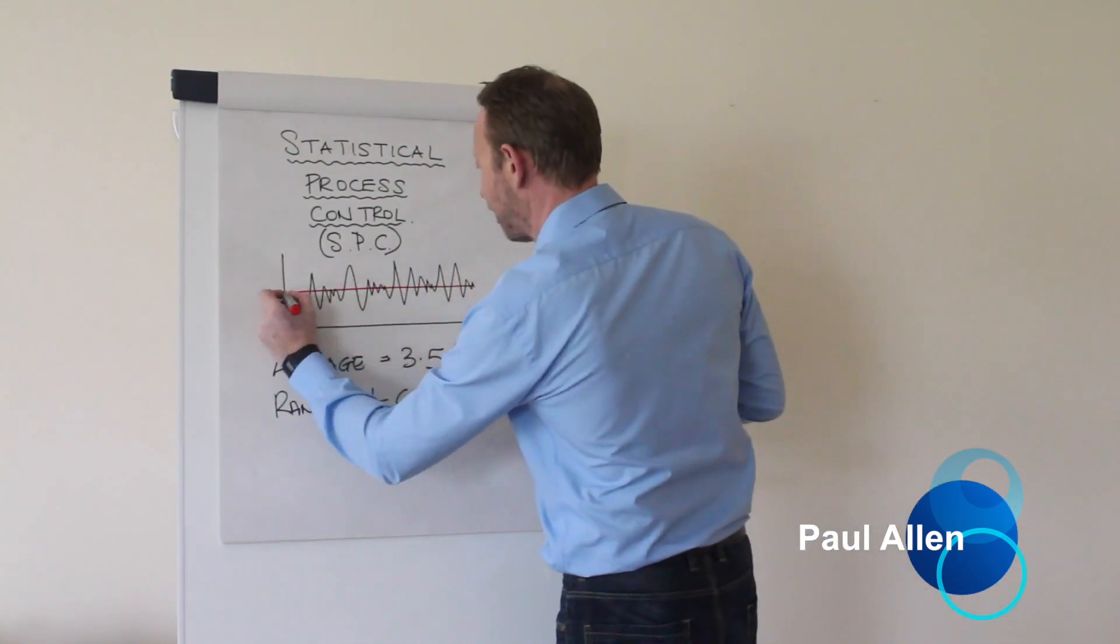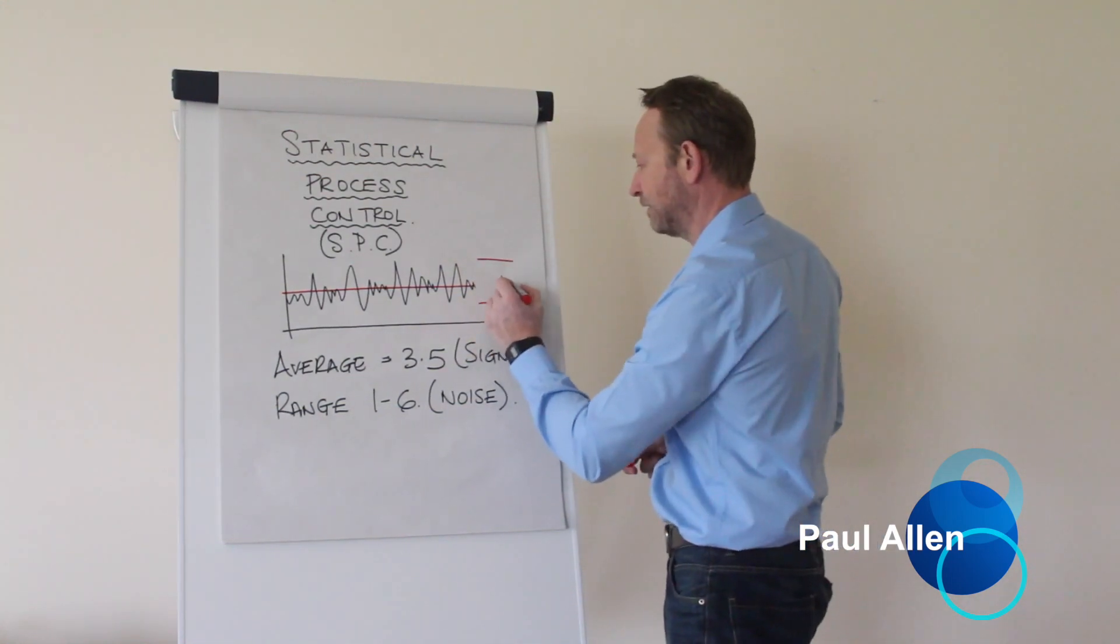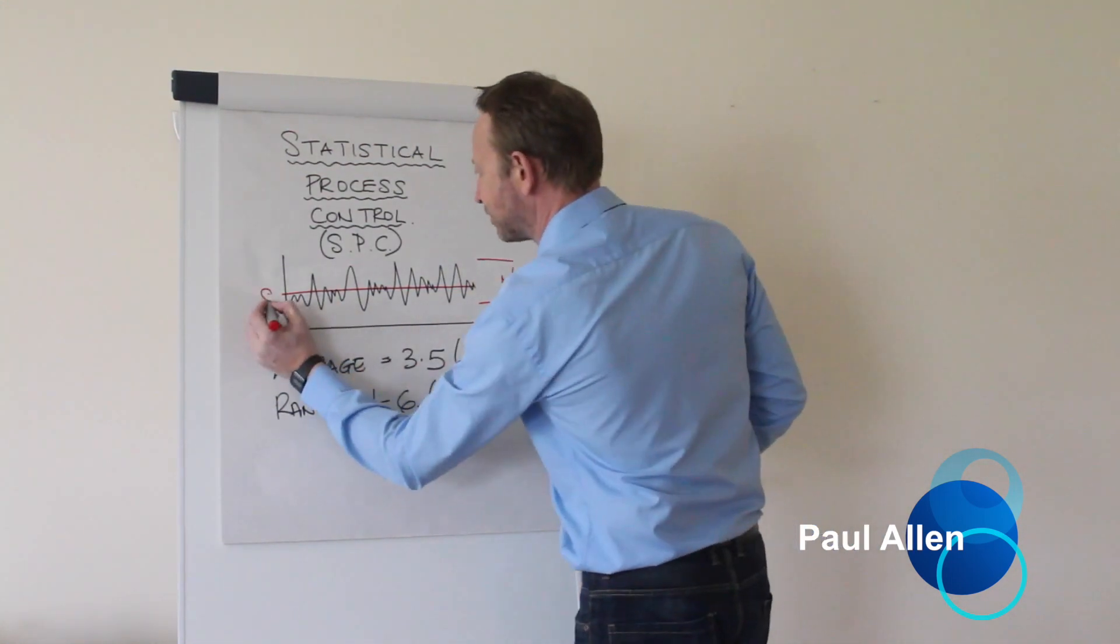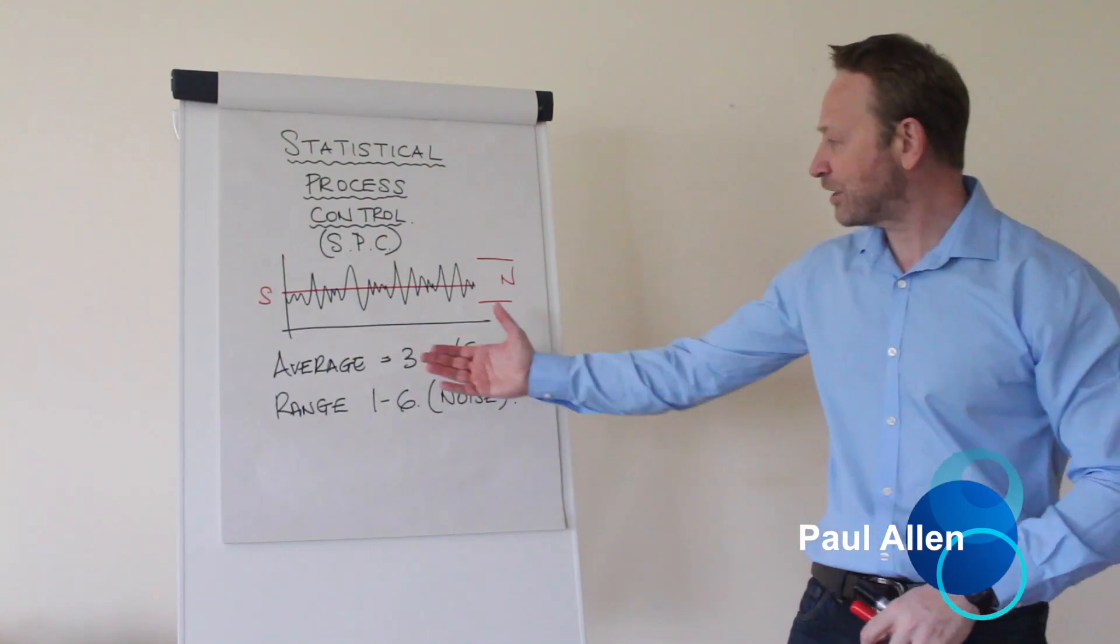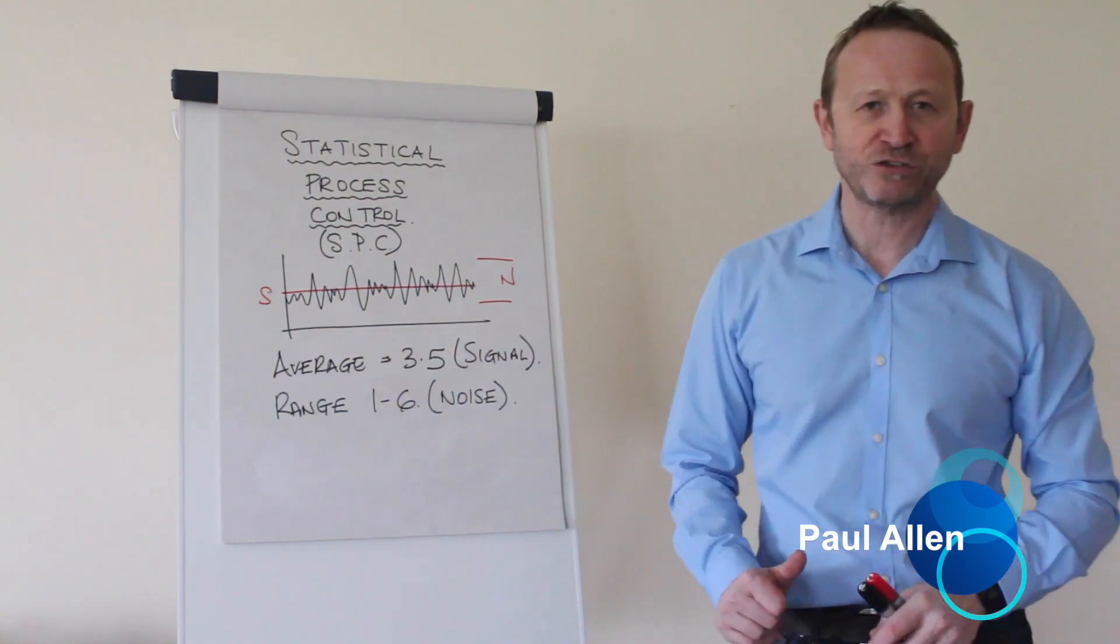I just put it on this graph. The signal is running through the middle. The noise, that's the signal, there's the noise, it's the spread. So on my dice, I've got an average 3.5, I've got a range of one to six.